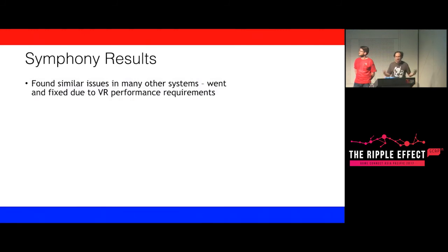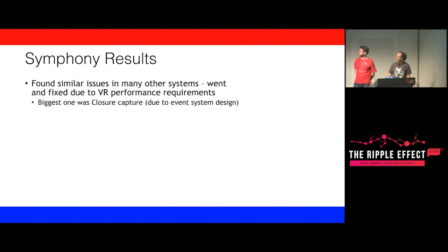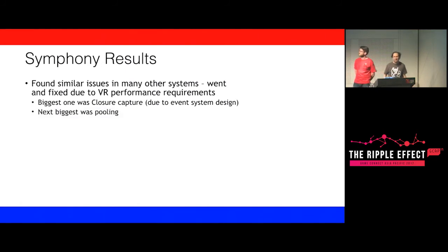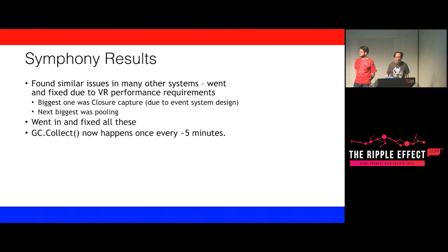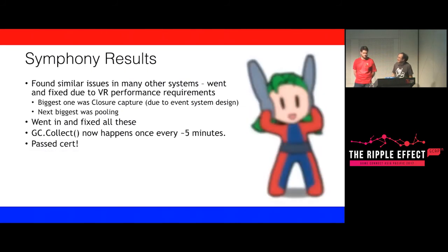In Symphony overall, we found similar issues across other systems and fixed them in triage order. The biggest issue everywhere was closure capture, because we used a lot of event systems for distributed messaging. The next biggest was pooling and object reuse. After fixing all of these, GC Collect in the shipping version still happens but on average about every five minutes rather than every five seconds. This essentially resulted in us not dropping any frames, which meant we passed cert and the game is on the store.